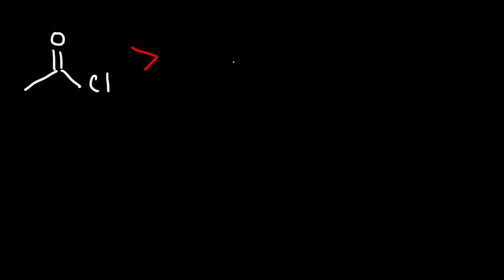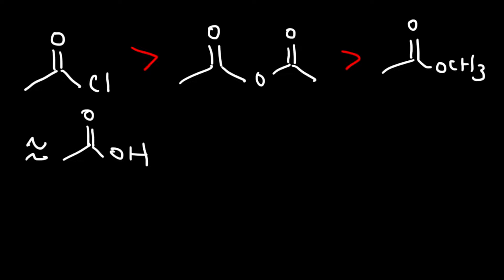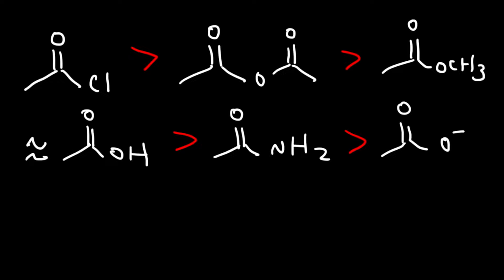In this lesson we're going to focus on reactions associated with carboxylic acid derivatives. The first thing you need to know is that an acid chloride is more reactive than an acid anhydride, and the acid anhydride is more reactive than an ester. The ester and a carboxylic acid have about the same reactivity. A carboxylic acid is more reactive than an amide, and an amide is more reactive than the deprotonated form of a carboxylic acid — the carboxylate ion.